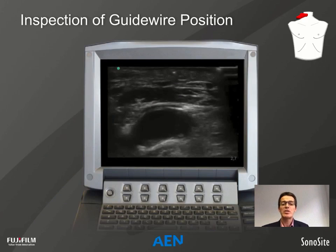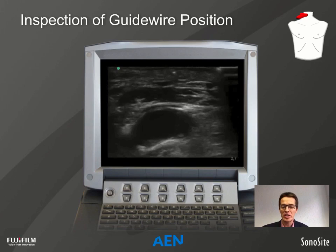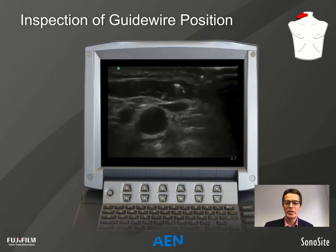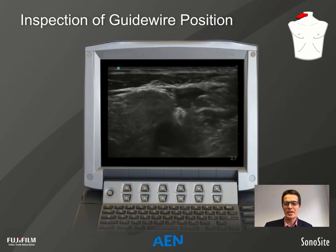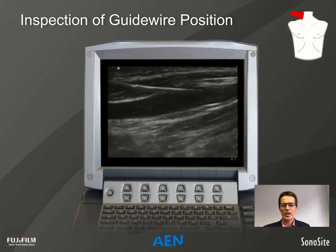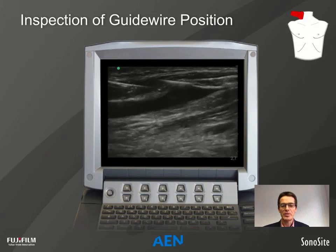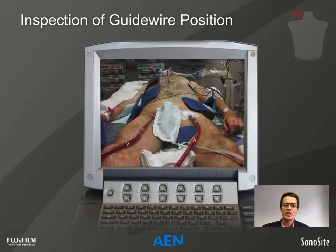Another important step is inspection of guide wire position, which takes only a few seconds and gives much more confidence — especially in difficult cases, ICU patients with coagulation abnormalities, or when inserting large catheters. As shown here, you see two hyperechogenic dots traveling through the sternocleidomastoid into the IJ. You can do this in short axis or long axis, then proceed with the dilator and place the catheter.